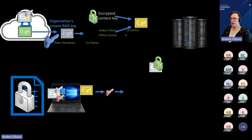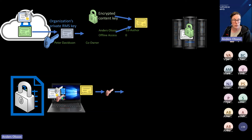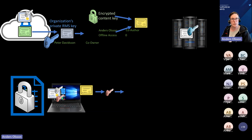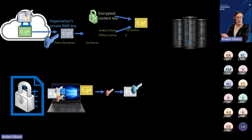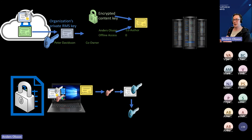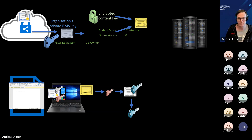This will be sent to our DKE service. We use the customer key — the customer organization key — the private part of that one, and we can decrypt the policy, getting access to the content key that is downloaded to the machine. Which makes it possible for Peter — or in this case Anders, my machine — to decrypt the policy, get the content key, and actually open the document. Quite cool, right?